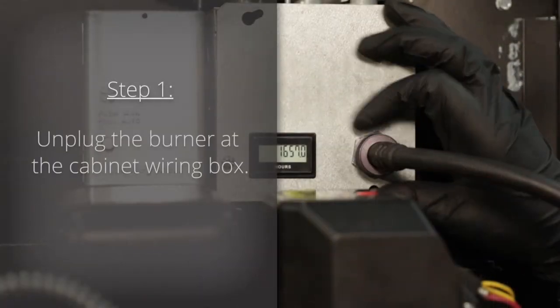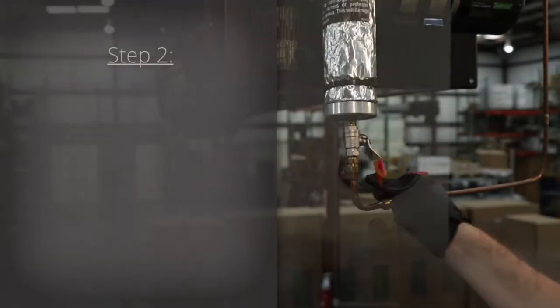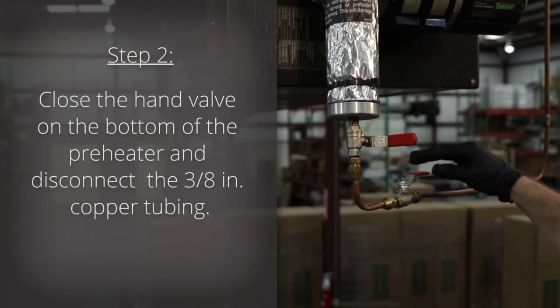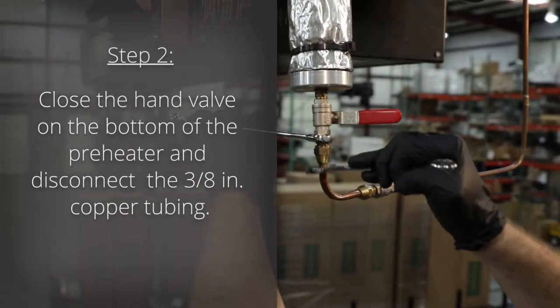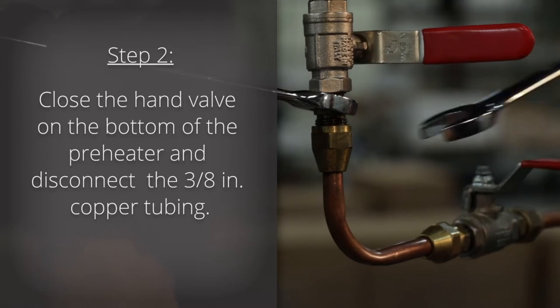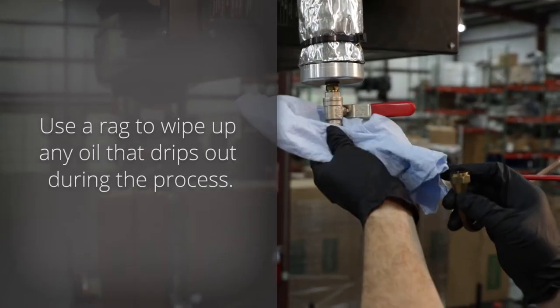Step one, unplug the burner at the cabinet wiring box. Step two, close the hand valve on the bottom of the preheater and disconnect the 3/8 inch copper tubing. Use a rag to wipe up any oil that drips out during the process.